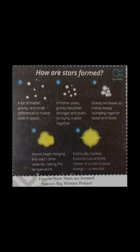Formation of the stars. Take a look at this figure: How stars are formed. Source: Big History Project. The process shows: 1. A lot of matter, gravity and small differences in matter exist in space. 2. In hotter areas, gravity becomes stronger and starts to clump matter together. 3. Gravity increases so matter keeps clumping together faster and faster. 4. Atoms begin banging into each other violently raising the temperature. 5. Eventually, nuclear fusion occurs and the matter is turned into pure energy and a new star.